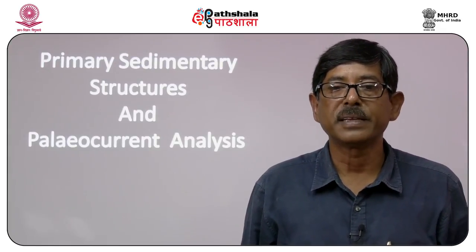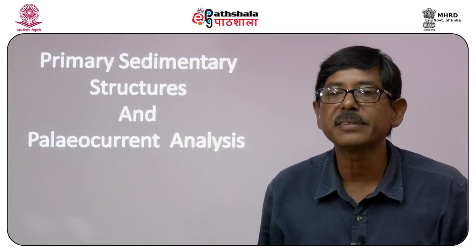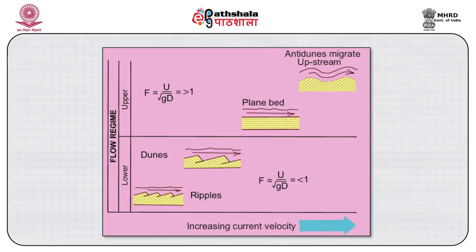Please see the figure: plain beds formed in the lower flow regime are flat and almost featureless, internally plain laminated and generally present in both silt and fine sand. Sediment is mainly transported as suspension load and rarely as bed load. The figure shows bed forms produced by unidirectional flow. An array of bed forms can be generated by unidirectional flow depending upon velocity, grain size and depth of flow.